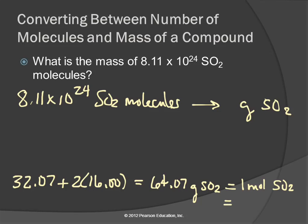That means that 64.07 grams of SO2 is equal to 1 mole of SO2. How many molecules of SO2 is that? 6.022 times 10 to the 23rd.